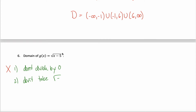However, I do have this radical — this square root sign. So the second domain rule is going to be very important. I have to make sure that I don't take the square root of a negative number. What this function is taking the square root of is x minus 5. So I have to make sure that x minus 5 is not a negative number.